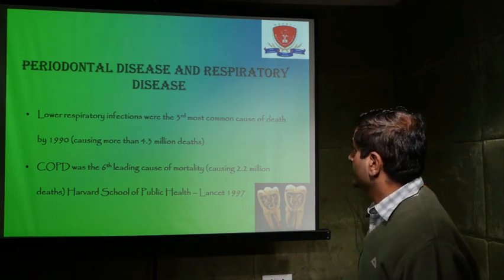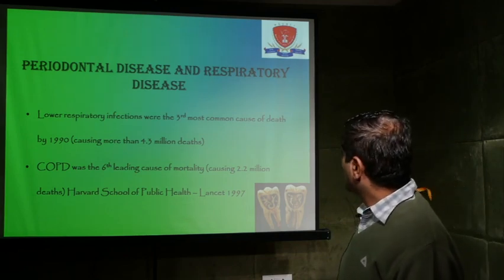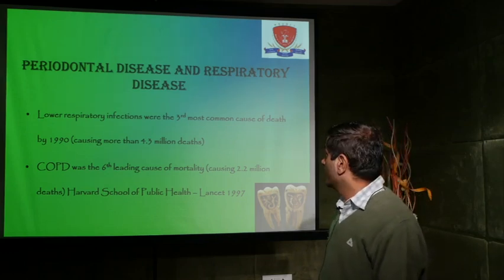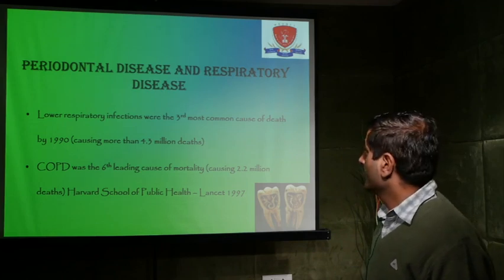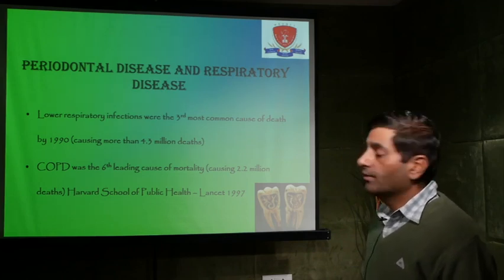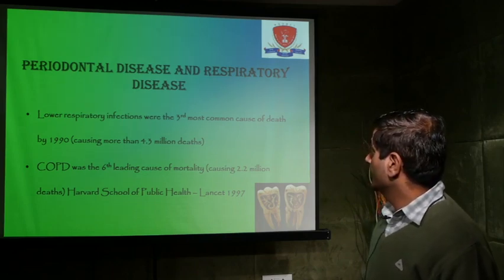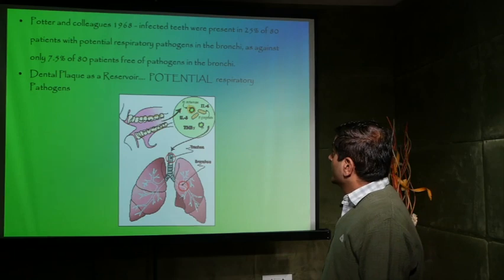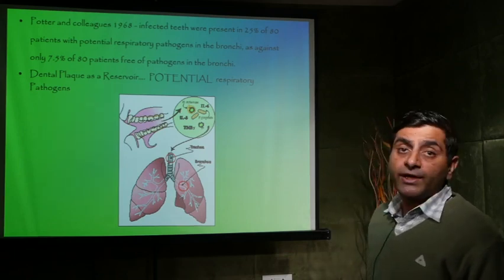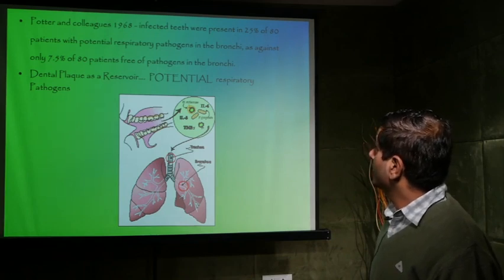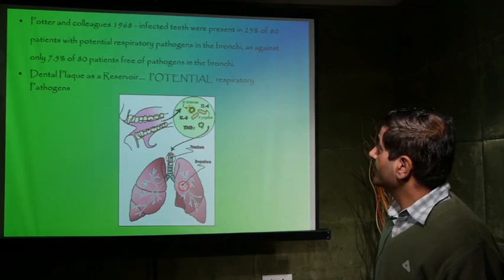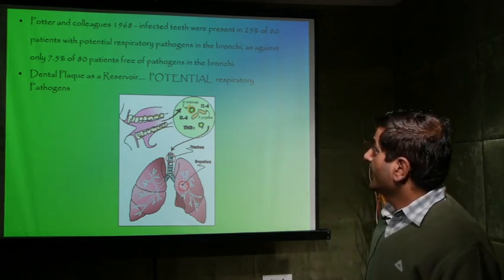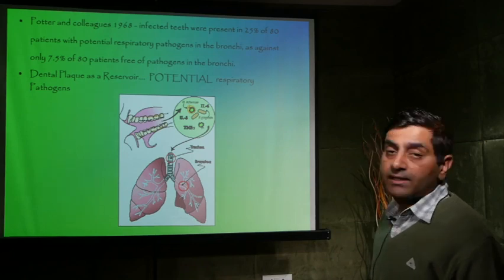Regarding periodontal disease and respiratory disease: lower respiratory tract infections were the third most common cause of death by 1990, causing more than 4.3 million deaths. Chronic obstructive pulmonary disease (COPD) was the sixth leading cause of mortality, causing 2.2 million deaths. Data from the Harvard School of Public Health — Potter and colleagues in 1968 — showed that infected teeth were present in 25% of 80 patients with potential respiratory pathogens in bronchi, compared to only 7.5% of 80 patients free of pathogens. This demonstrates that dental plaque serves as a reservoir for potential respiratory pathogens.